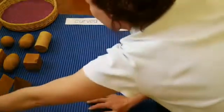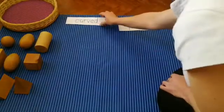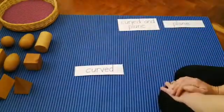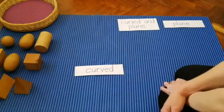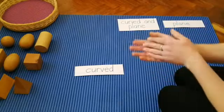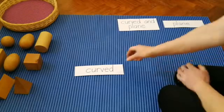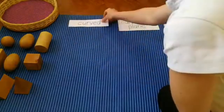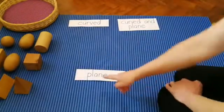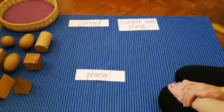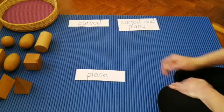So today we're going to categorize them. We're going to put them under their correct headings. This word says curved, and that means the shapes are totally curvy, smooth and they can roll. We have another label over here that says plain. That means the sides are straight and flat and the solid can't roll.